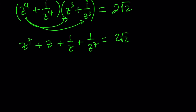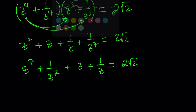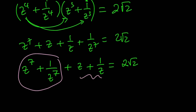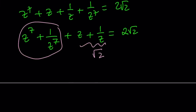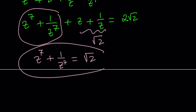So we have z to the 7th plus 1 over z to the 7th plus z plus 1 over z, which equals 2 root 2. Now we're trying to evaluate z to the 7th plus 1 over z to the 7th. I do know that z plus 1 over z equals square root of 2, so by subtracting, z to the 7th plus 1 over z to the 7th equals root 2, because 2 root 2 minus root 2 is root 2. And that is the answer.